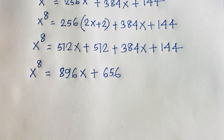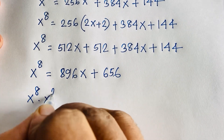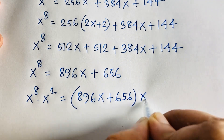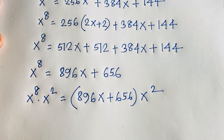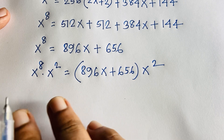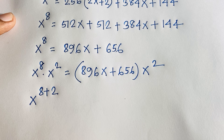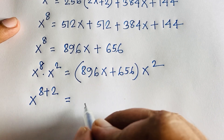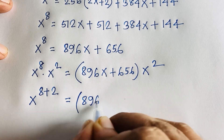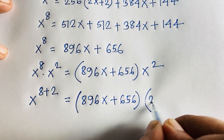We are looking for x^10. Since x⁸ = 896x + 656, we multiply both sides by x². Using the exponent rule, x⁸ · x² = x^(8+2) = x^10. So x^10 = (896x + 656) · x².